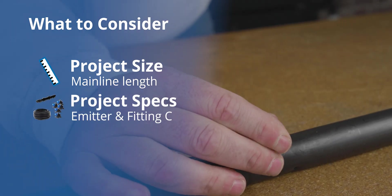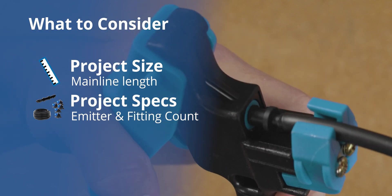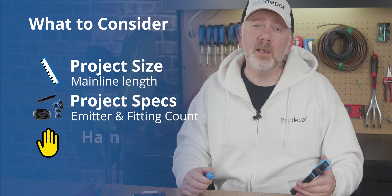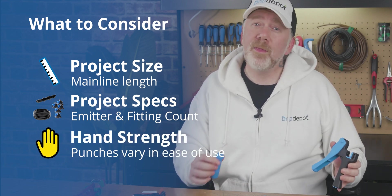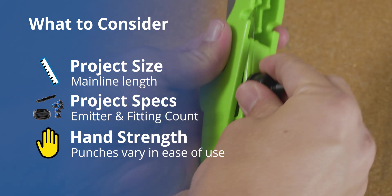Consider your project specifications. If your project calls for a lot of quarter-inch fittings and button drippers, some tools will help you out more than others. The other big thing to keep in mind when getting a punch is your hand strength. Some punches, like this Pro Punch, are much easier on the hands than a punch like this one. Some tools also have other features that make drip irrigation installation easier to accomplish.